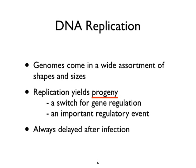Genomes come in a wide assortment of shapes and sizes, which controls accessibility of host proteins and sites within the cell. Replication yields progeny, which makes more virus, but replication is also a switch — a dividing point in the virus life cycle between immediate early or early events and later events. Later events produce capsid proteins, glycoproteins, and things needed to make an infectious virion. DNA replication is always delayed after infection; the virus must first enter the cell, transcribe its genetic information, and encode proteins necessary to replicate the viral genome.